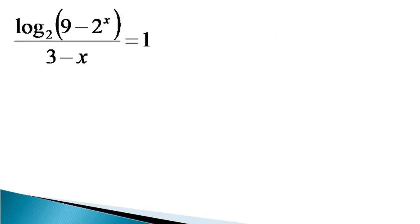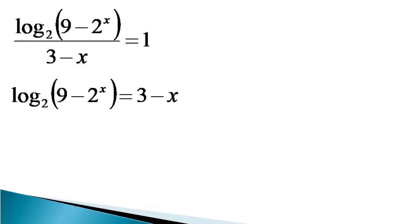To solve this equation, the first thing we do is cross multiply the terms to linearize the equation, and it becomes log of (9 minus 2 raised to the power x) to the base 2 is equal to 3 minus x. At this juncture, we use the definition of log to get the value of 9 minus 2 raised to the power x as being equal to 2 raised to the power (3 minus x).